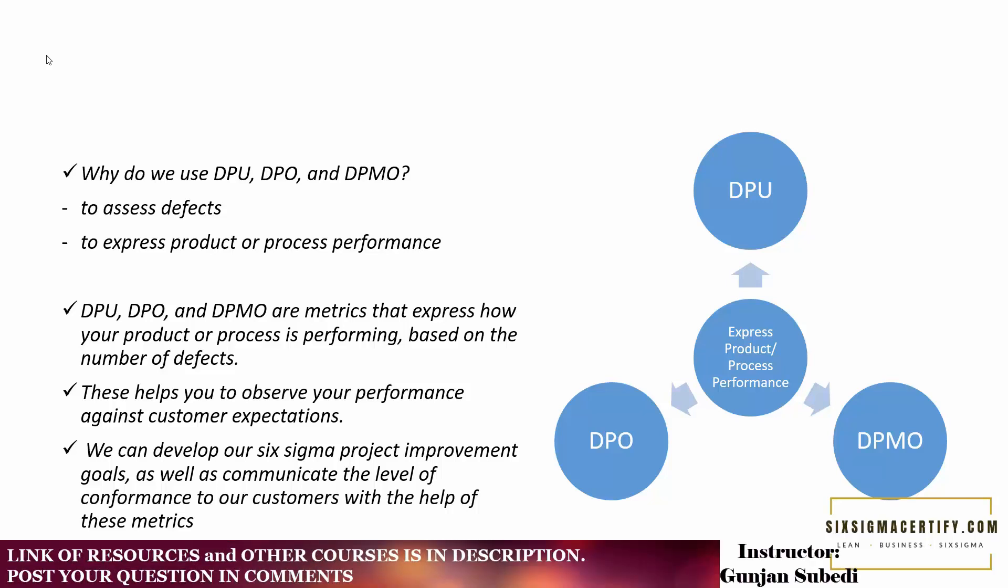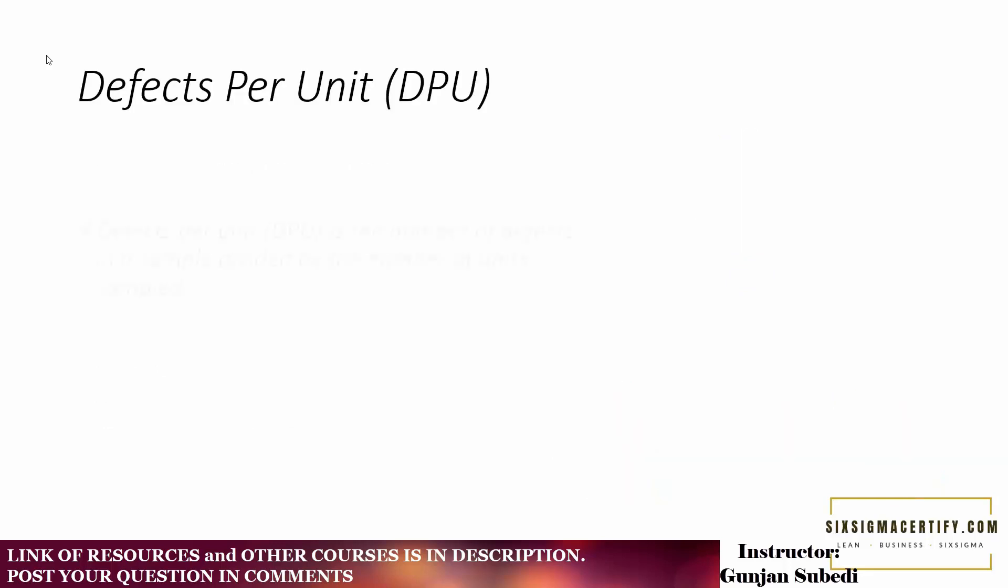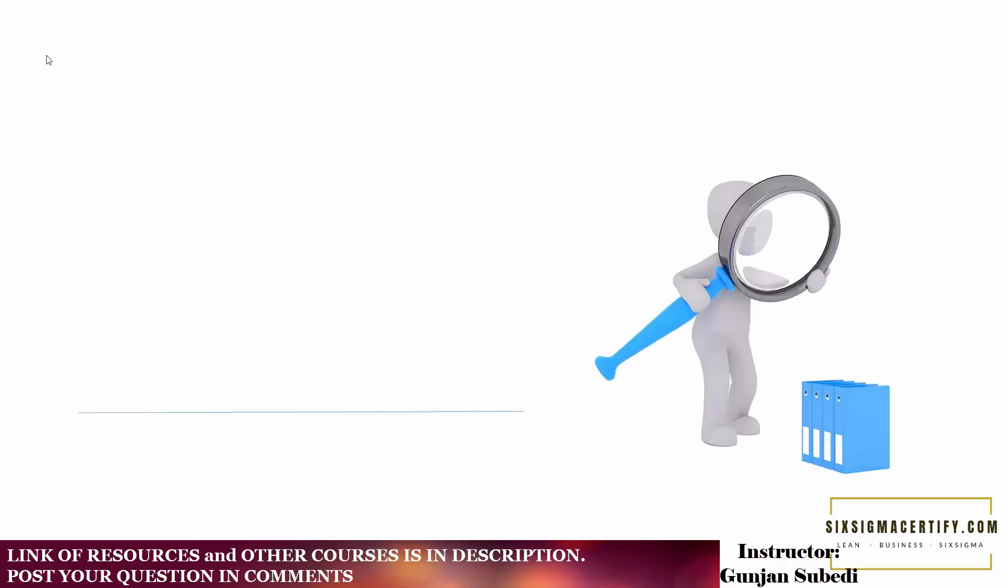Let us learn how. First of all, we will study the DPU or defects per unit. Defects per unit is the number of defects in a sample divided by the number of units sampled. I've tried to explain it here with an example.